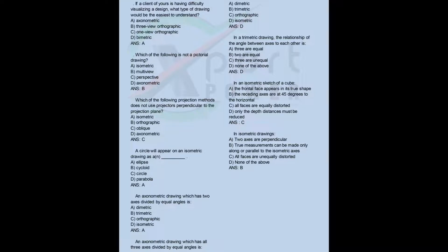A circle will appear on an isometric drawing as: a) an ellipse, b) cycloid, c) circle, d) parabola. Answer: A. An axonometric drawing which has two axes divided by equal angles is: a) dimetric, b) trimetric, c) orthographic, d) isometric. Answer: A.